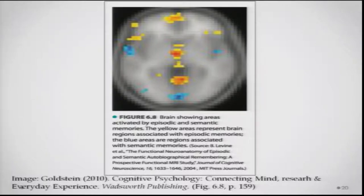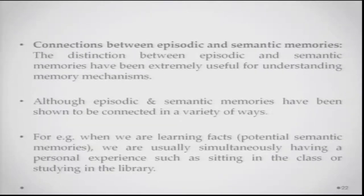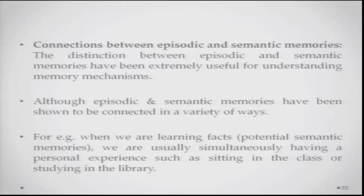There is a neural-level dissociation between episodic and semantic memories, as also demonstrated by the cases of Casey and the Italian woman. The results indicate that while there is an overlap in the activation caused by episodic and semantic memories, there are certainly major differences. Other research has also found differences between areas activated by episodic and semantic memory. Although the distinction has been made, episodic and semantic memory have also been shown to be connected in a variety of ways — they need to be connected to form a coherent sense of being.